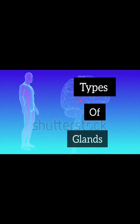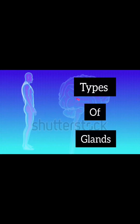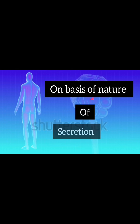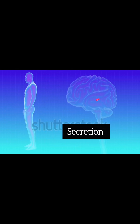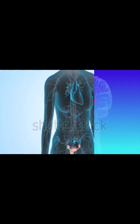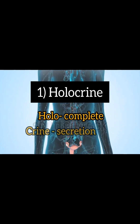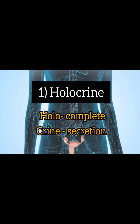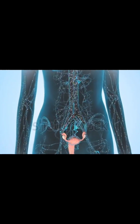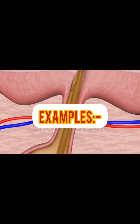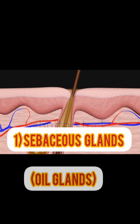Types of glands on the basis of nature of secretion. Number one: holocrine — it means complete secretion, the complete cell comes out as secretion from the basement. Its examples are sebaceous glands,